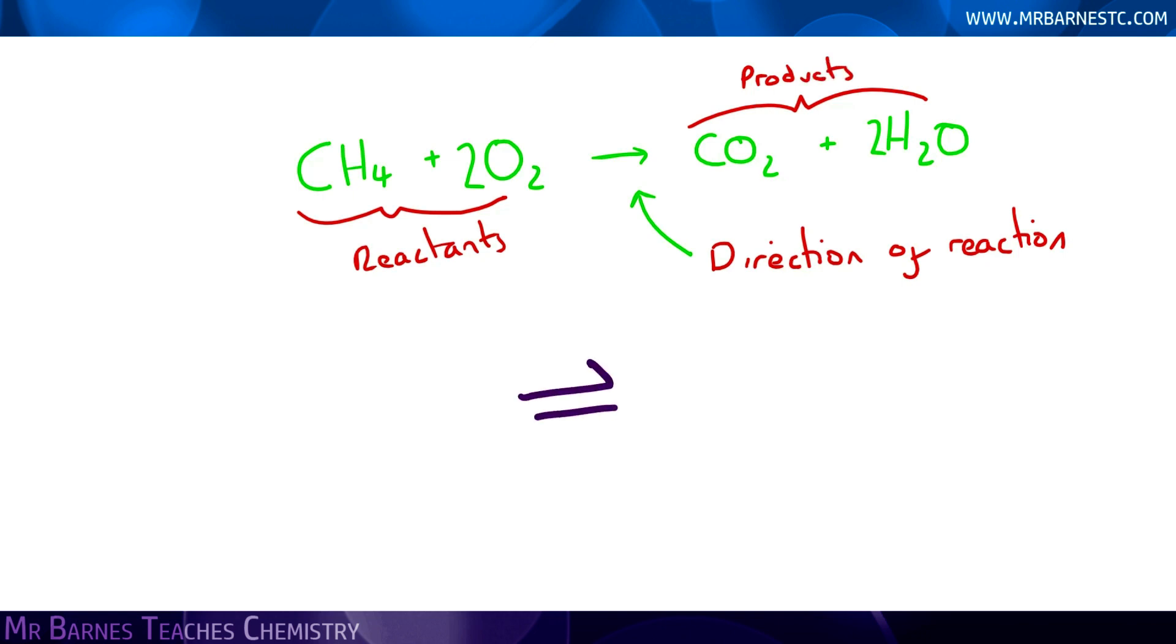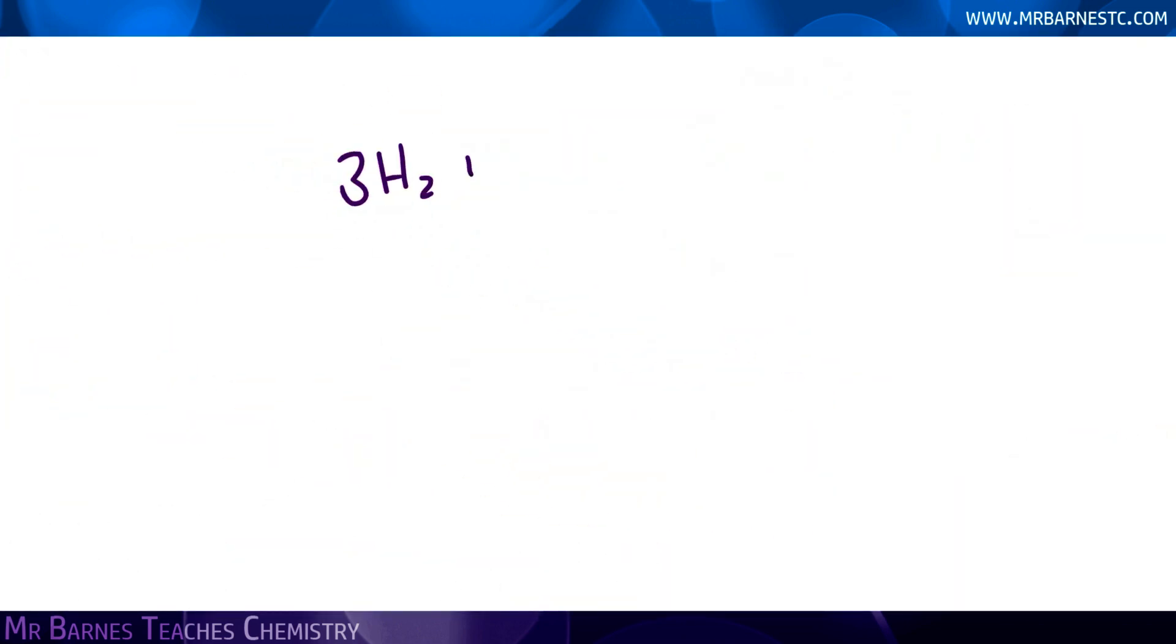However, sometimes you might see this symbol here, so what you need to be able to do is explain what the symbol means. The best way to do that is to have a look at an example where it's used. So in the reaction between nitrogen and hydrogen to produce ammonia, you have this symbol and this symbol means it's a reversible reaction.